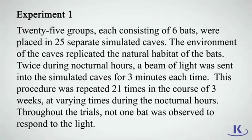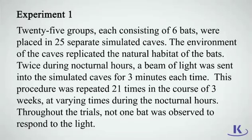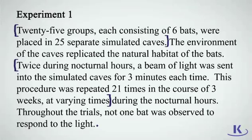Experiment one: 25 groups, each consisting of six bats, were placed in 25 separate simulated caves. The environment replicated the natural habitat of the bats. Twice during nocturnal hours, a beam of light was sent into the simulated caves for three minutes each time. This procedure was repeated 21 times over three weeks at varying times. Not one bat was observed to respond to the light. The method was placing 25 groups of six bats in simulated caves with a three-minute light beam sent twice a night, repeated 21 times. The result: none of the bats responded.